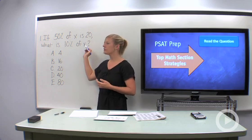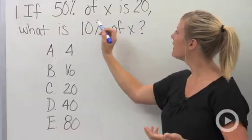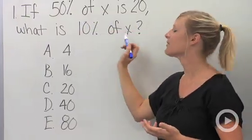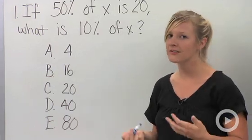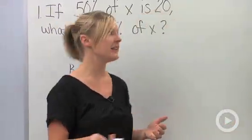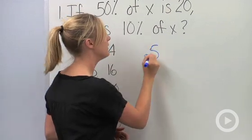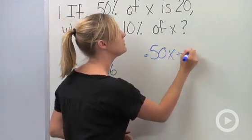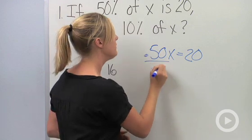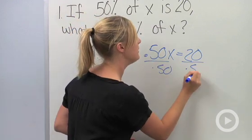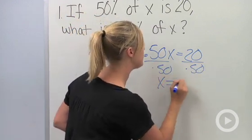Here we have a typical question. It says, if 50% of X is 20, what is 10% of X? Pretty straightforward, right? So let's go ahead and start solving just like you would on the PSAT. We're going to set up our equation, and we're going to say 50% of X is equal to 20. If we divide both sides by 50%, we're going to get that X is equal to 40.